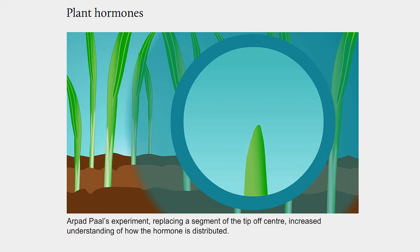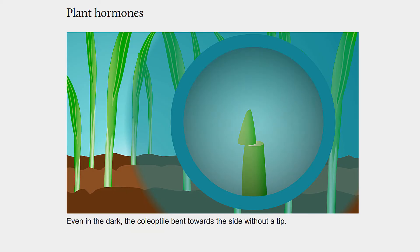Arapad-Parl's experiment, replacing a segment of the tip off-center, increased understanding of how the hormone is distributed. Even in the dark, the coleoptile bent towards the side without the tip.